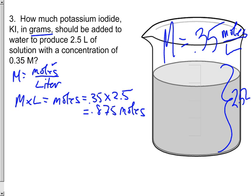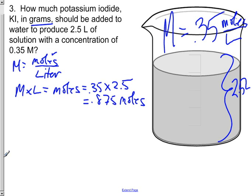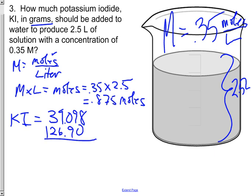But our problem asks for the answer in grams, so we're going to have to convert these moles into grams. The first step in that process is to calculate the molar mass. Potassium iodide, which is KI, has 1 potassium at 39.098 and 1 iodide at 126.90. So we add that up and we get a molar mass of 165.998 grams per mole.